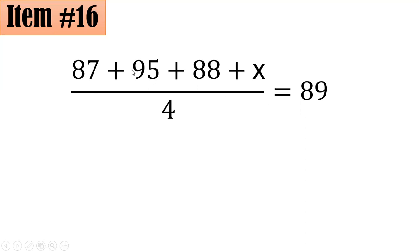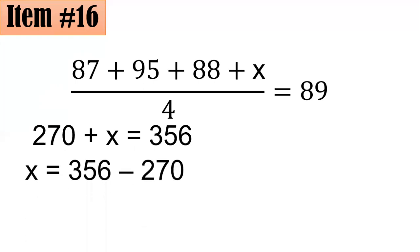What I did next was, I added 87, 95, 88 as 270, and we have here plus X. And I multiplied both sides by 4 to clear off fractions. Hence, I have 270 + X = 356. And solving for X, we have to subtract both sides by 270. You get X = 86, letter A.